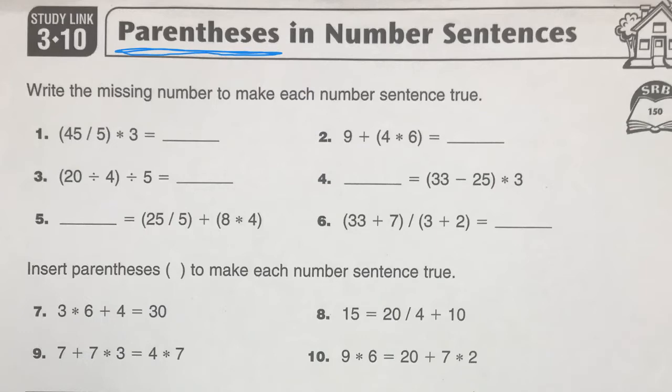So here we go. Just remember, this means divided by. So 45 divided by 5, think about that. Hopefully you know that is 9. Then I have 9 times 3. Hopefully you know that is 27.